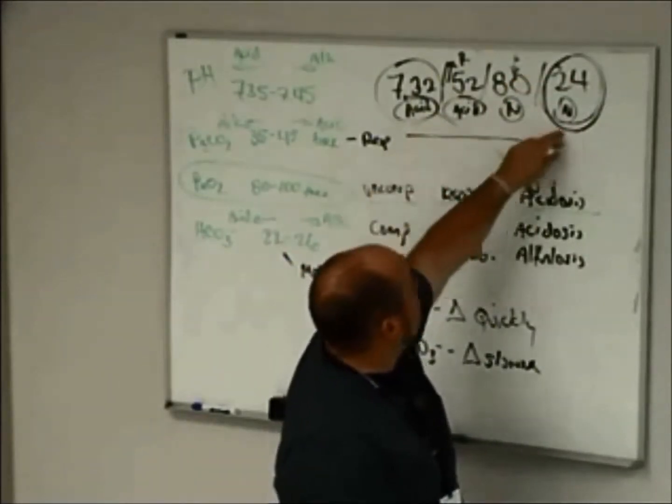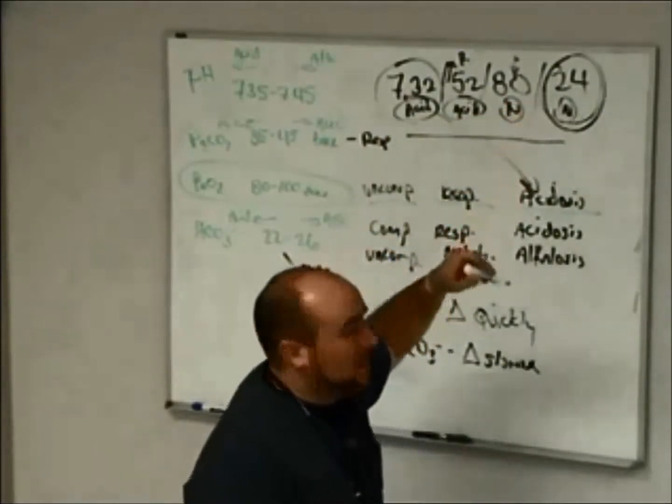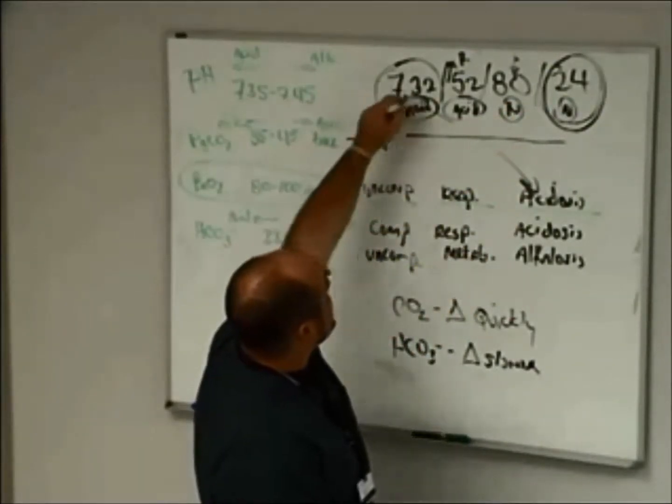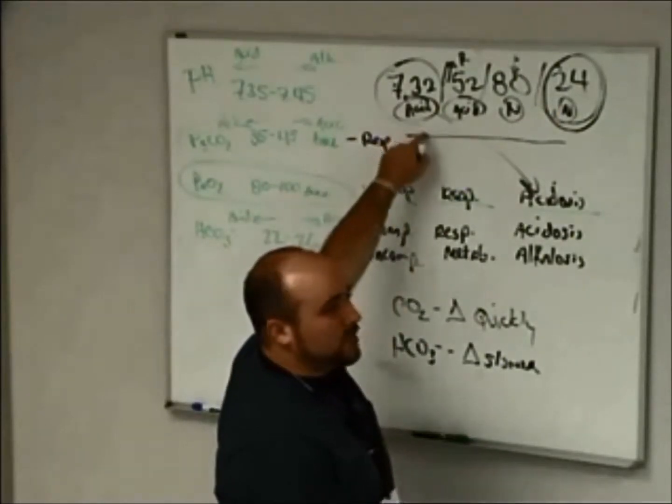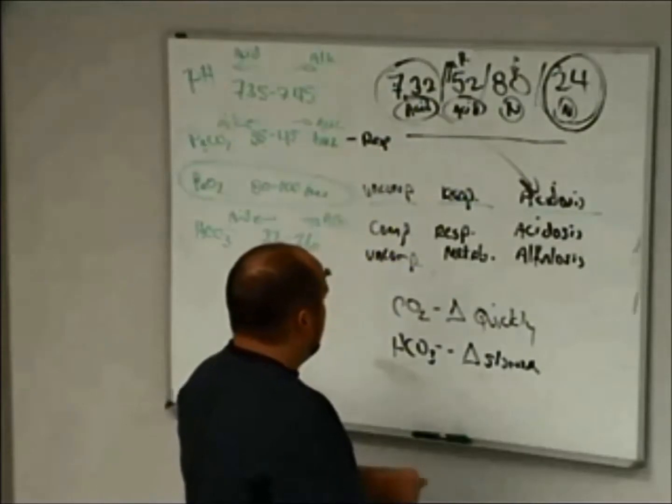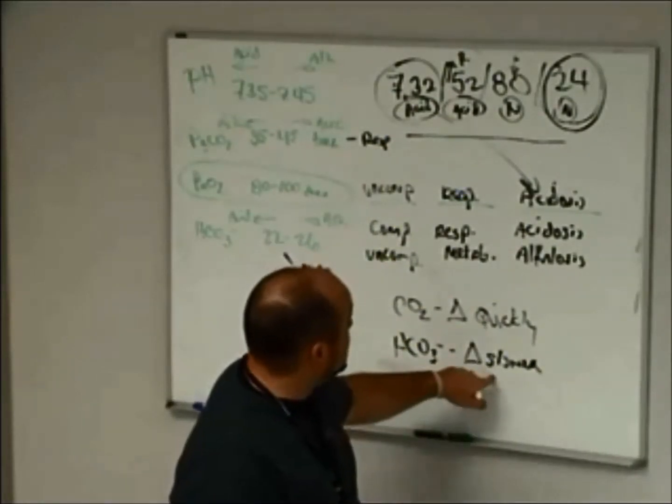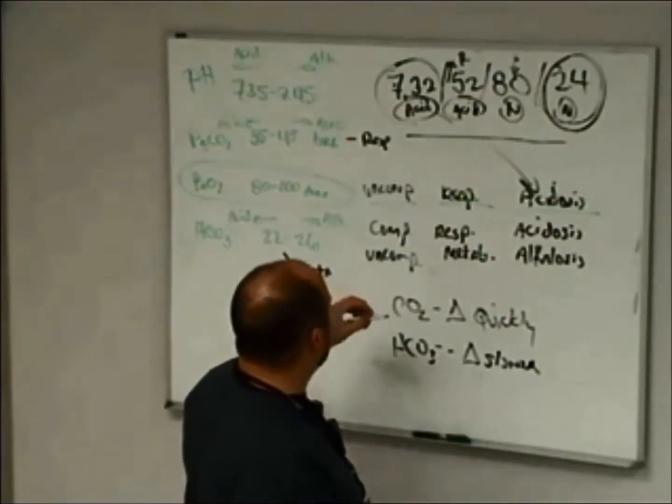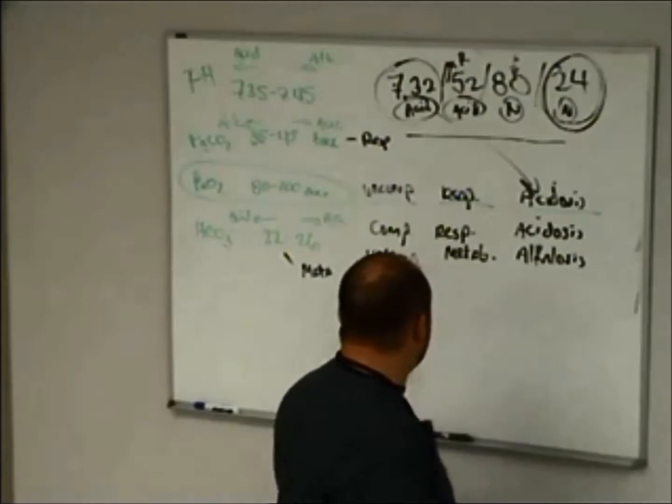Now, patient stays in this state for a few hours. This bicarb is going to slowly increase to try to bring this to normal. That is the ultimate goal of the body, is to get this to 7.40. So we know that CO2 changes quickly. Bicarb changes slowly. This is going to be a, I would call it acute respiratory acidosis.